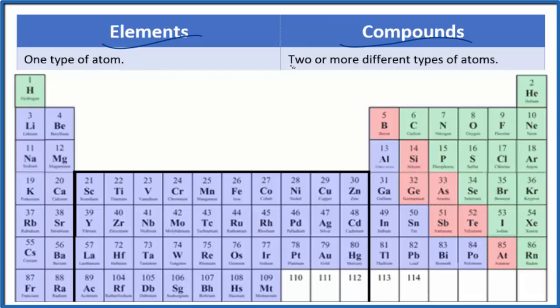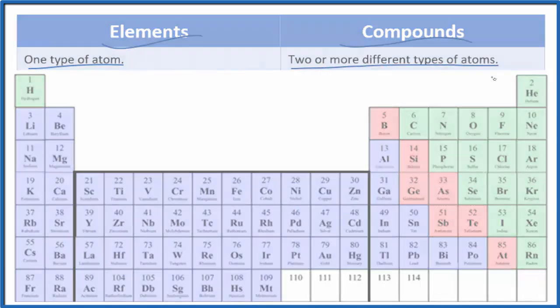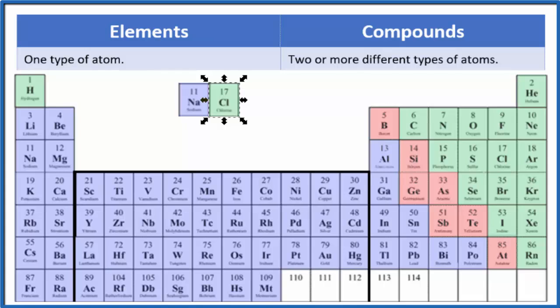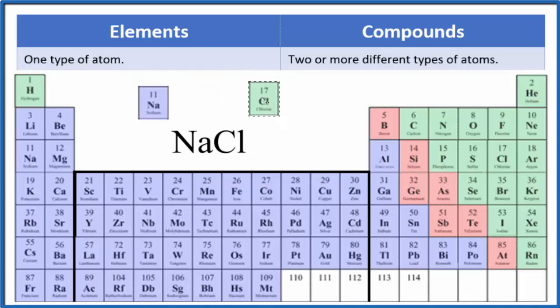Elements are made of one type of atom, where compounds are made of two or more different types of atoms. We could take the metal sodium, bond that to a nonmetal chlorine, and that would give us NaCl. That's just table salt. We have an element sodium and an element chlorine, but when they come together they chemically bond and form a compound, NaCl.